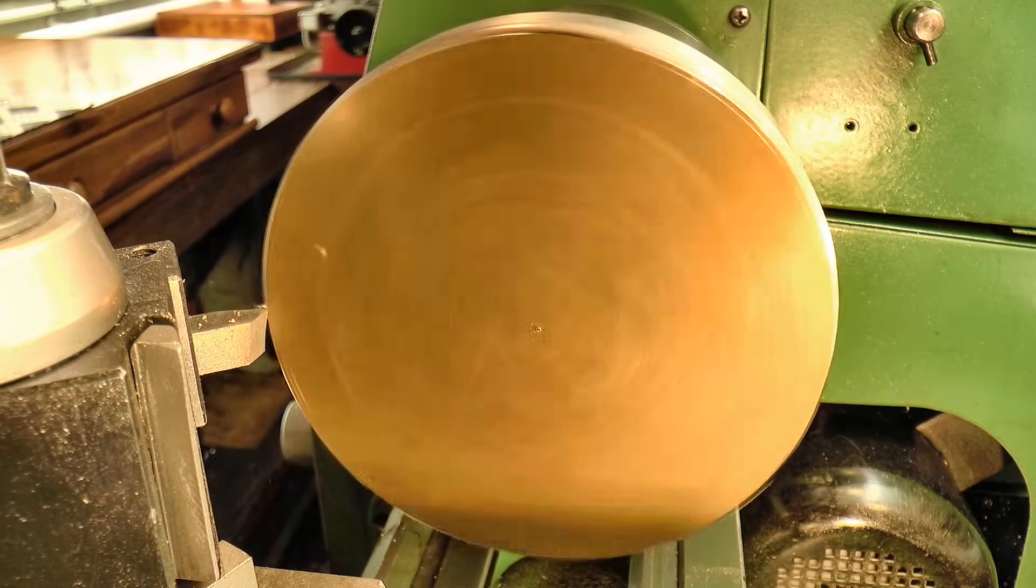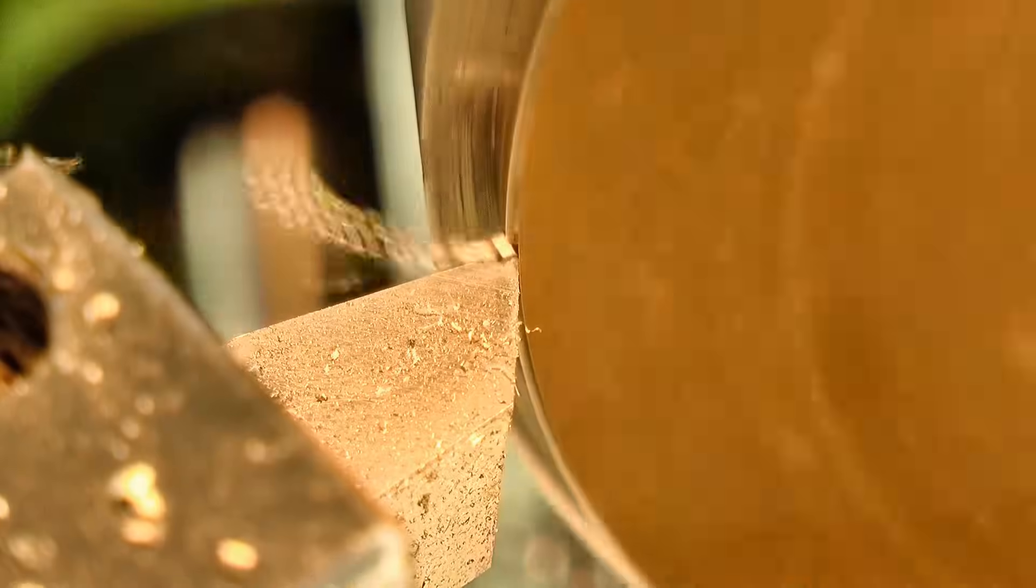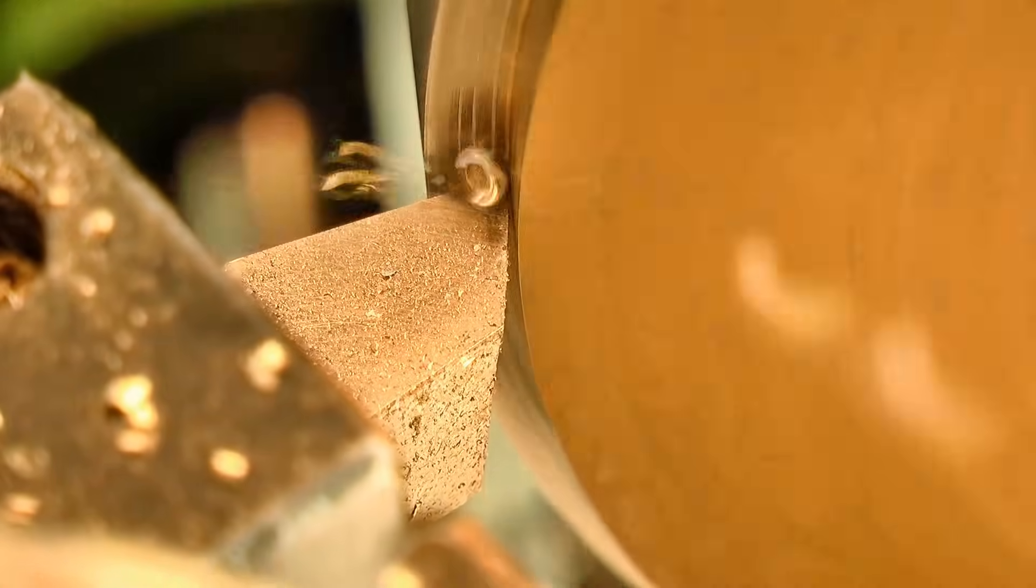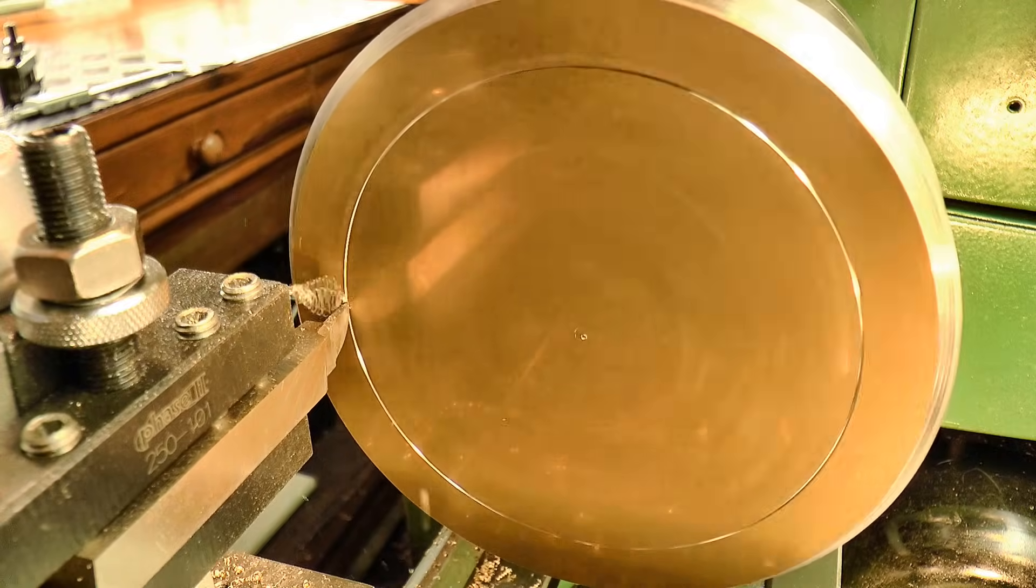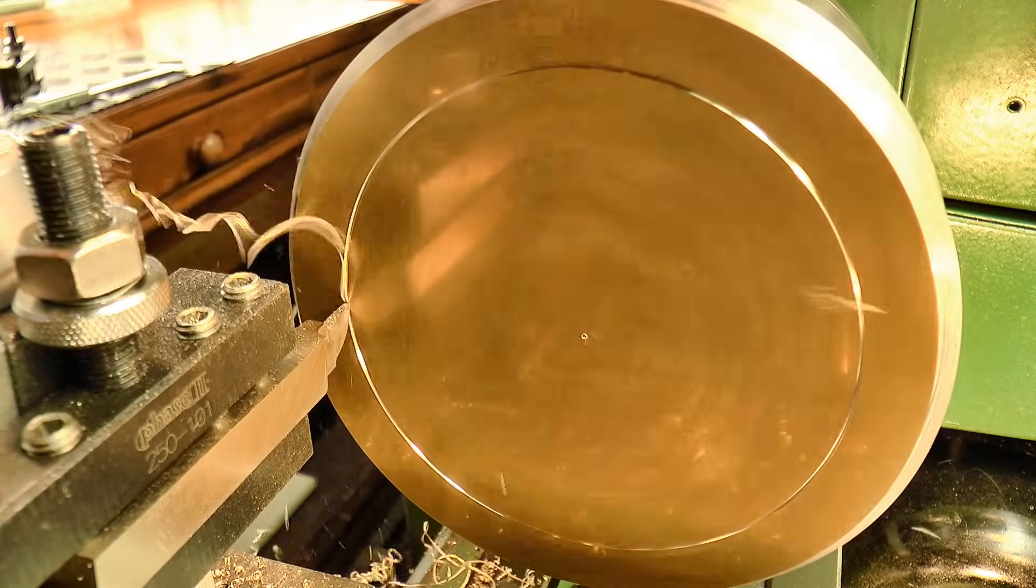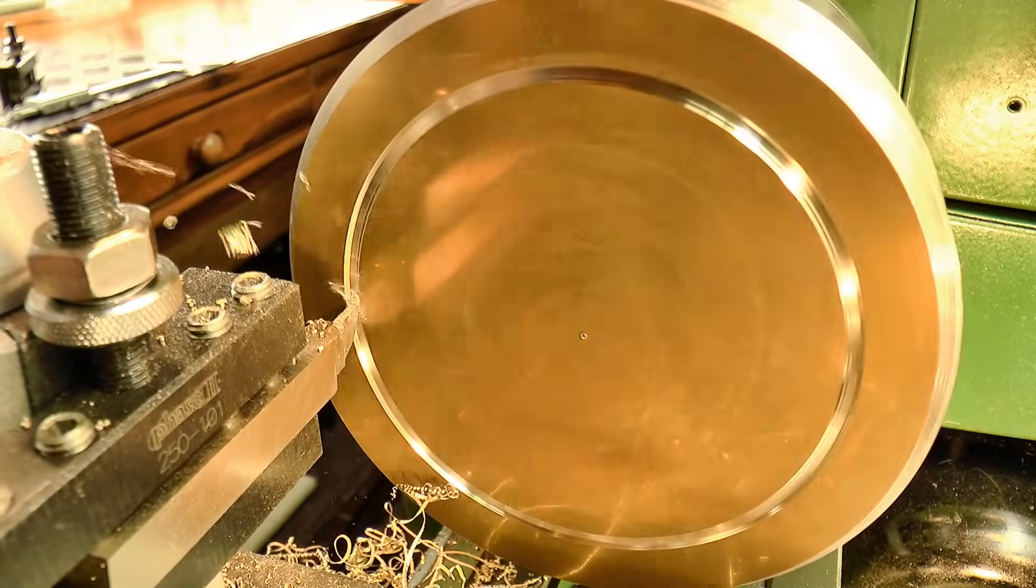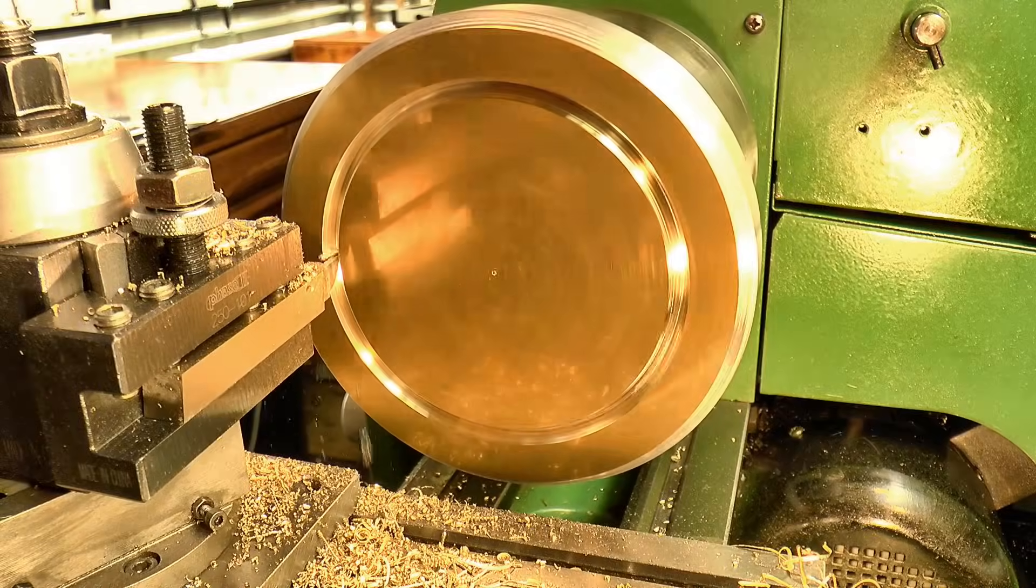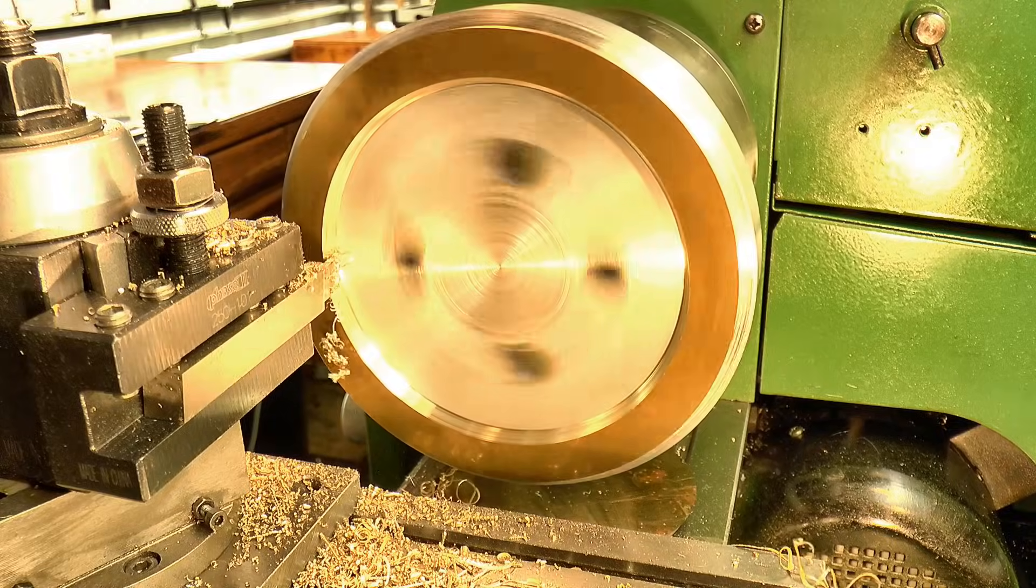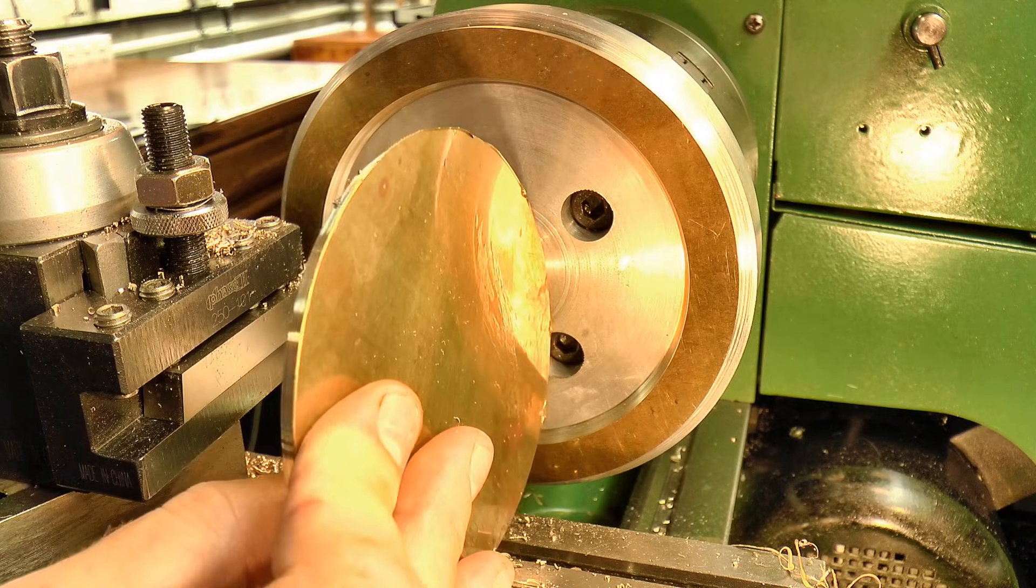Once the blank was fixed in place, I trimmed the perimeter to size. Then I made the trepanning cut to remove the stock from the center. This slug of brass will make an excellent great wheel on a future clock.